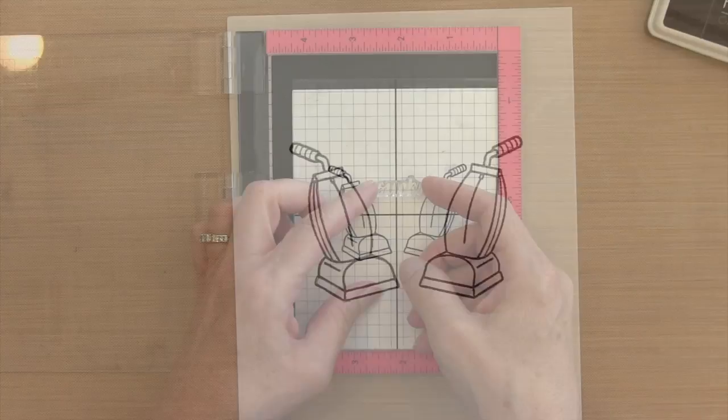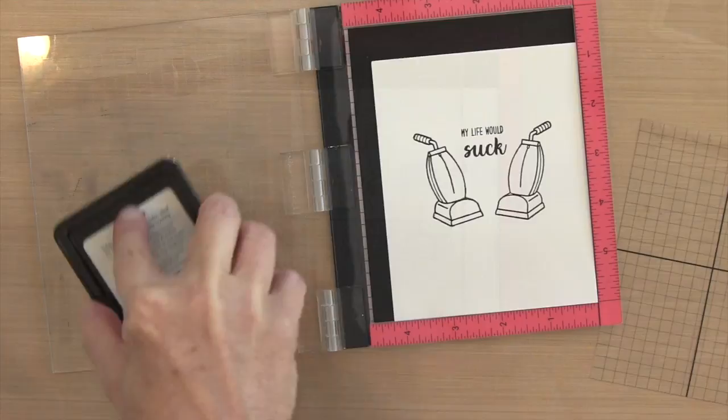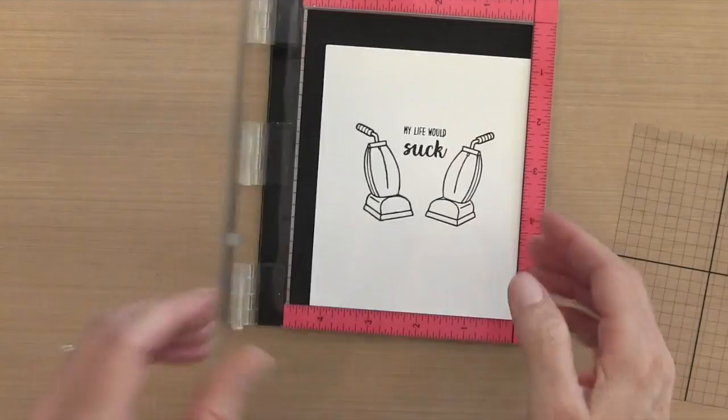Once I colored over it with my marker, it looks great. Then I took the three sentiments that were in the set and I stamped them with the MISTI using some Hero Arts black ink. I used Hero Arts here because I wanted something fast-drying because I didn't want it to smudge.